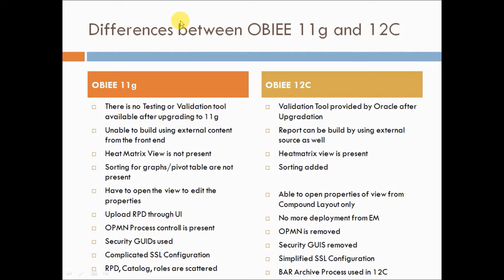The second important feature: in 11g, if you have data in an Excel sheet and want to import it directly from the front end and merge it with an existing report that has the same columns, that feature is not available. Using external content from the print and presentation services is not present in 11g, whereas in 12c that feature is incorporated.